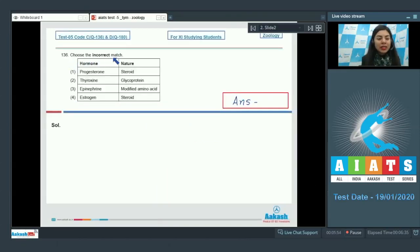Choose the incorrect match: hormone nature - progesterone steroid, thyroxin glycoprotein, epinephrine modified amino acid, estrogen steroid. Option number one, progesterone is steroidal in nature, that's correct. Thyroxin is a glycoprotein, that's incorrect. Thyroxin is produced from amino acid tyrosine, and this amino acid tyrosine is covalently bonded to iodine.